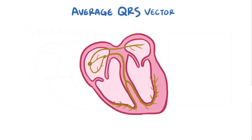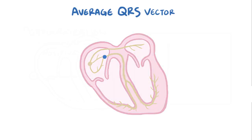With that in mind, let's take a closer look at the mean or average QRS vector. After the depolarization wave arrives at the AV node, it travels down the interventricular septum and starts depolarizing the ventricles. The Purkinje fibers sit just below the endocardium, which is the innermost layer of the heart.